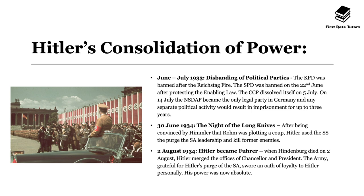On 30th June 1934 was the Night of the Long Knives. After being convinced by Himmler that Ernst Röhm, who was the leader of the SA, was plotting a coup, Hitler used the SS to purge — in other words kill or imprison — the SA leadership and also kill former enemies.